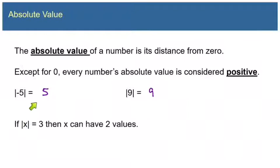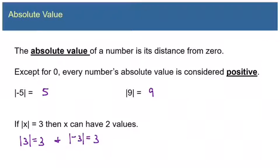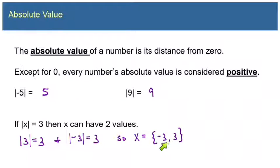So now that you know that, when you see something like absolute value of x equals three, that means x could have two different values. The absolute value of positive three is three, and the absolute value of negative three is also three. So absolute value equations usually give us two solutions. Our solution set for an equation like this would be written x equals curly braces negative three and positive three. Note that this is not an interval, so we don't use brackets or parentheses — we use curly braces to indicate we're just listing those two numbers.